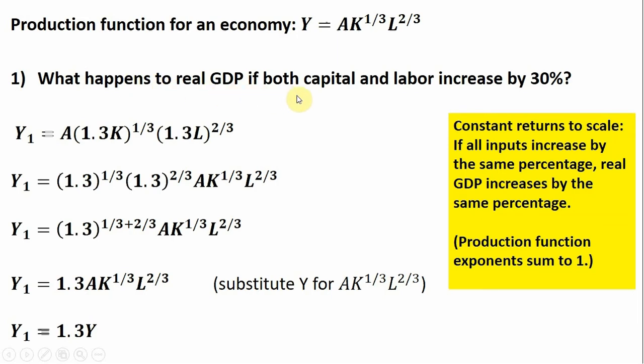We want to ask this question: what happens to real GDP if both capital and labor increase by 30%? The definition of constant returns to scale is this: if all inputs increase by the same percentage, real GDP increases by the same percentage. When you have constant returns to scale, you'll notice that for the production function, the exponents sum to one.